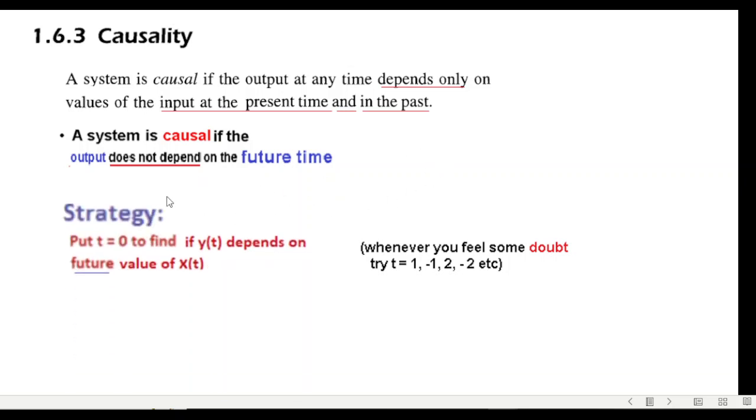Okay, the strategy will be that we put t equals zero to find y(t) and to see if it depends on the future value of x(t) or not. And in some cases the result may not be very clear, then we should put more than one value, that is t equals 1 and minus 1.